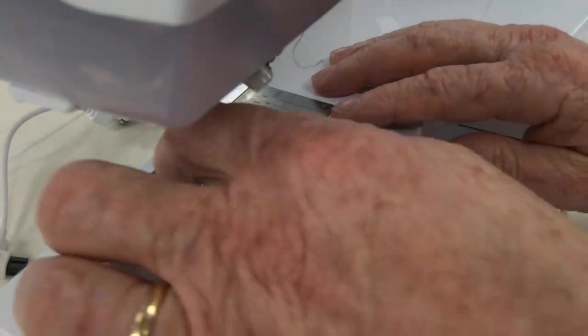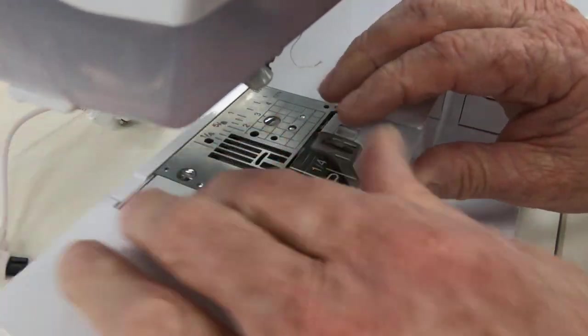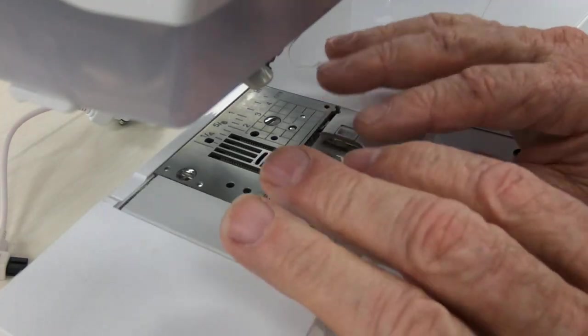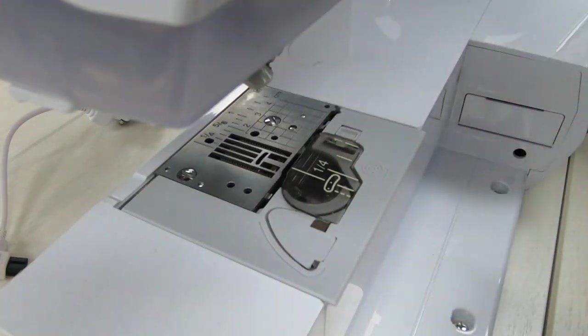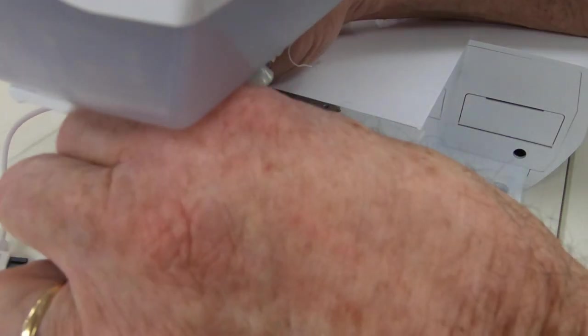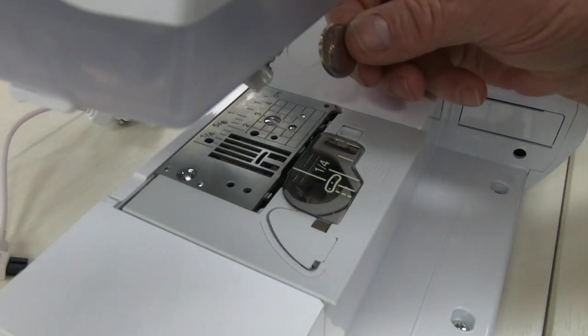The first thing you do is you remove your bobbin cover. That's to latch it in there, leave it in place, because what you're going to do now is you're going to remove the... One of the nice things about a Baby Lock,